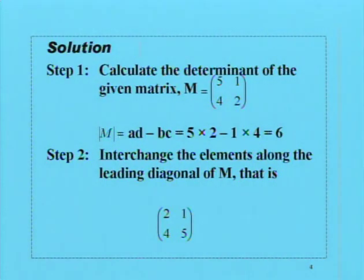Step 1: Calculate the determinant of the given matrix M, which is (5, 1, 4, 2). The determinant of M is equal to AD minus BC. Substituting values for A, B, C, and D, we will have the determinant equal to 5 times 2 minus 1 times 4, which will give us 6.